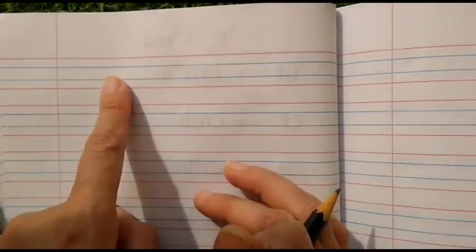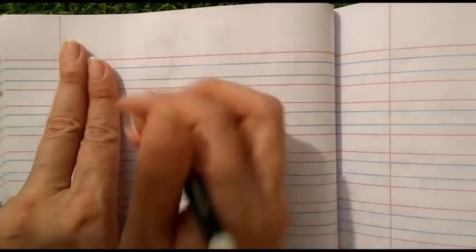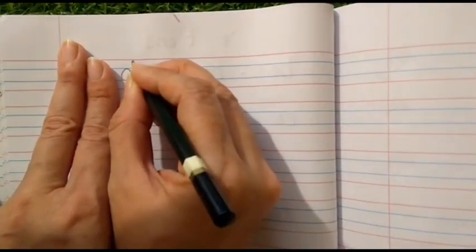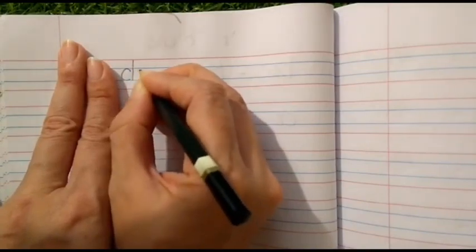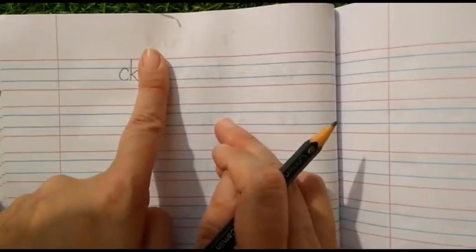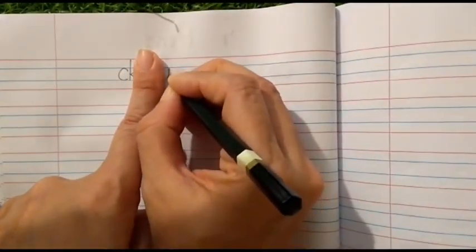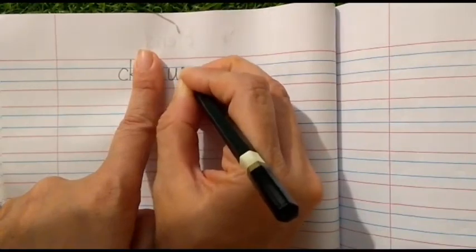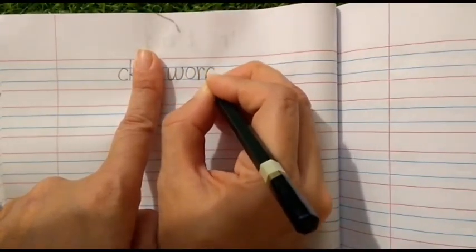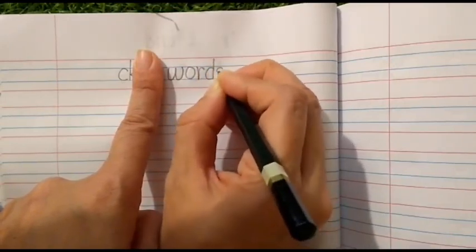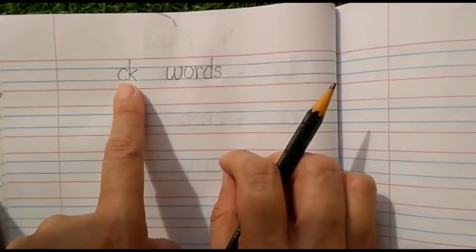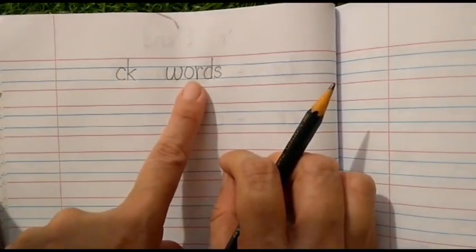And in the first line, first we are going to place two of our fingers. Then we will write small c, small k. And after that, we are going to put our index finger and we will write w, o, r, d, s - words. So here in the first line, we will write CK words the way I have written.